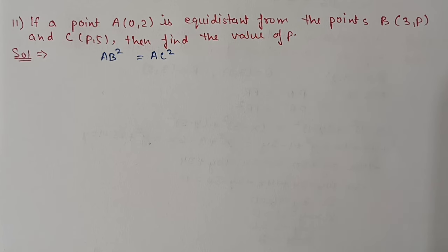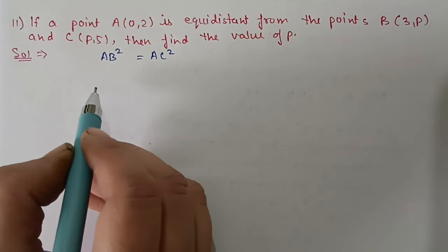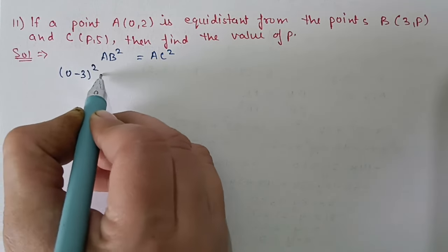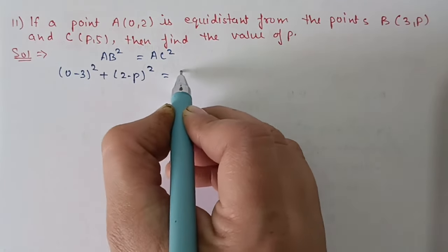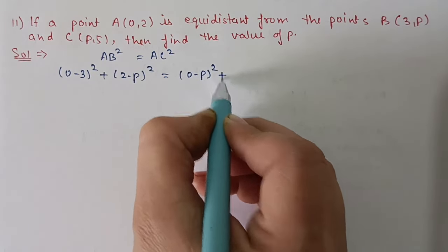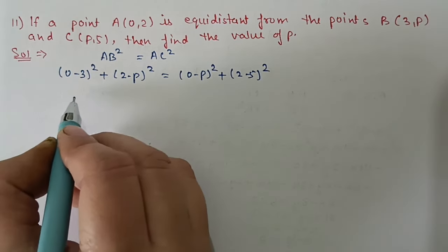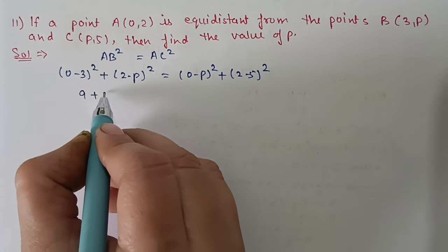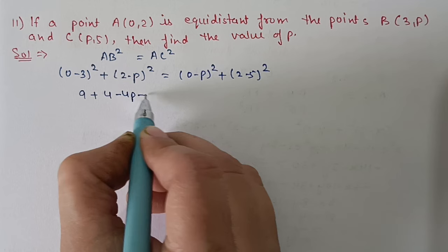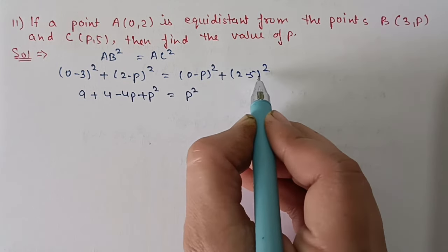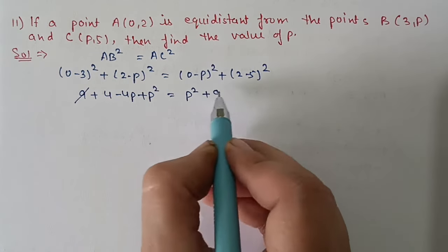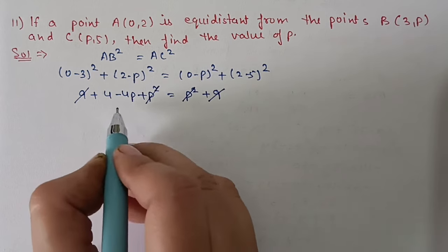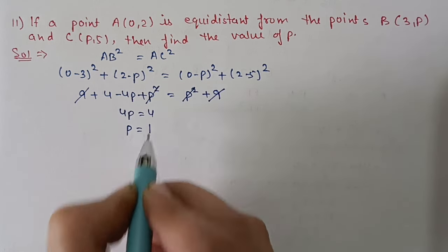Question number 11: If point A(0, 2) is equidistant from points B(3, p) and C(p, 5), find the value of p. So AB² = AC². Applying the distance formula: (0 - 3)² + (2 - p)² = (0 - p)² + (2 - 5)². This gives 9 + 4 - 4p + p² = p² + 9. The p² and 9 cancel from both sides, leaving 4 - 4p = 0, so 4p = 4, giving p = 1.